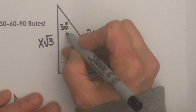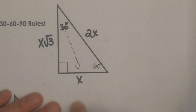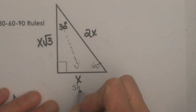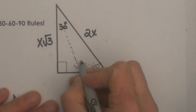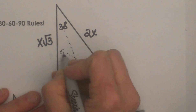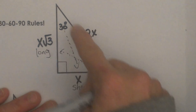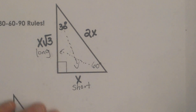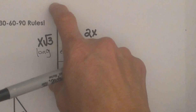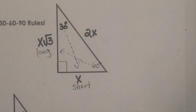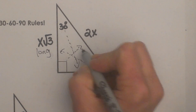Opposite your 30 degree angle is what we are going to call the shortest leg — this is the short leg. Opposite the 60 degree angle is your long leg. So the short leg is opposite the 30 degree angle, the long leg is opposite the 60 degree angle, and the hypotenuse is always opposite the right angle.